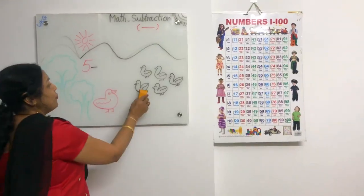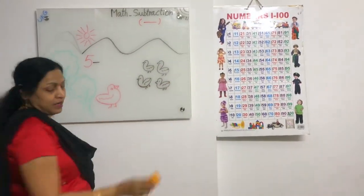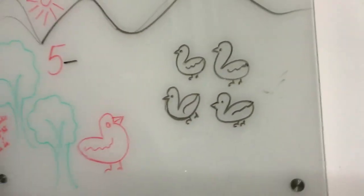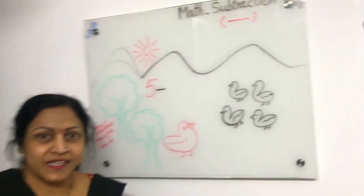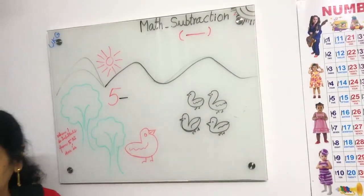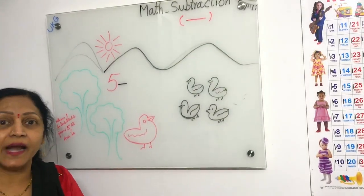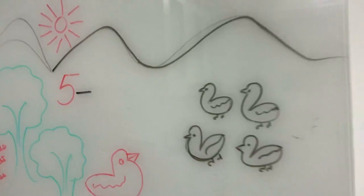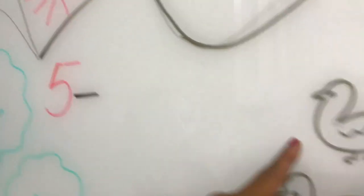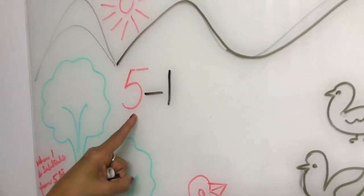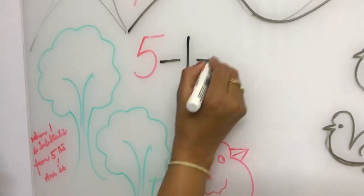So how many ducks came back? Four little ducks came back — one, two, three, four. What did you understand? How many ducks did not come back? Only one little duck did not come back. So when one is subtracted from five, the answer is four.